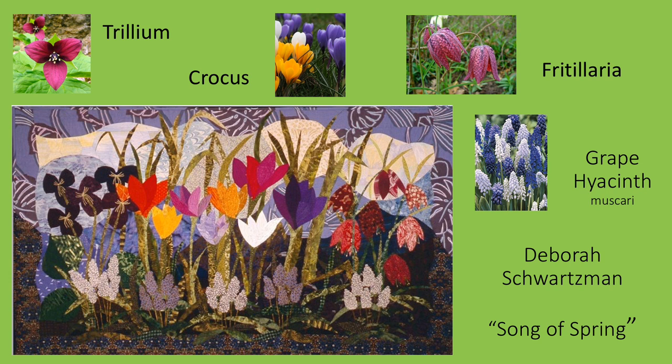When I first saw the quilt, I immediately recognized everything except the fritillaria. The only blooms I was familiar with that were that size and had pendant or nodding bell-shaped flowers were snowdrops, which are white. But a friend posted a photograph of a fritillaria in bloom, and I realized that that's what they were. The fabrics Schwartzman has selected for them are perfect for recreating the tessellating patterns these blooms can display.